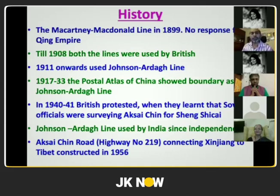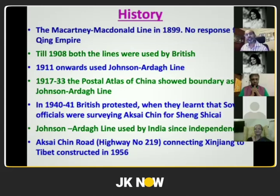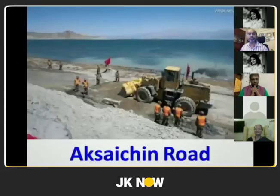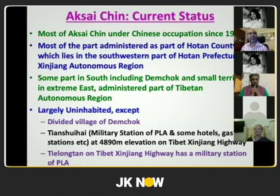Since independence, we have used the Johnson-Ardagh Line to delineate our borders, but again did not position soldiers. We were shocked to discover in 1956 that a road had already been constructed through Aksai Chin connecting Xinjiang with Tibet. Most of Aksai Chin is currently administered as Hotan County in the southwestern part of Hotan Prefecture of Xinjiang Autonomous Region — it is a question between Xinjiang and us, not Tibet. Only some parts in the south and east belong to the Tibetan Autonomous Region.